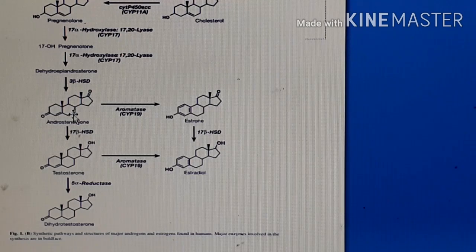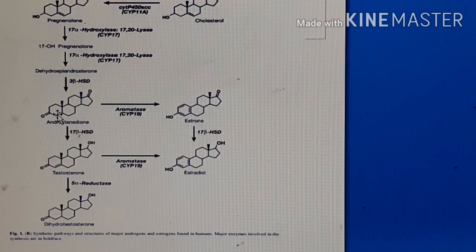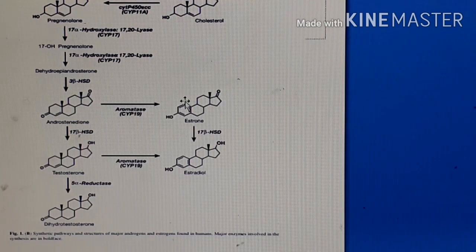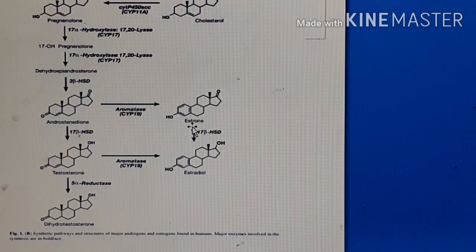After DHEA, the next intermediate formed is androstenedione. 'Dione' means two ketonic functionalities, and 'androstene' refers to the double bond present in the structure. This is androstenedione. Then the aromatase enzyme — which belongs to the cytochrome P450 system, specifically CYP19 — is involved in the synthesis of an aromatic ring. Ring A of the perhydrocyclopentanophenanthrene is aromatized to form estrone, which is one example of the estrogens.